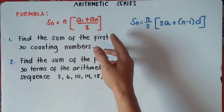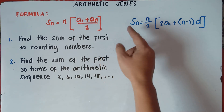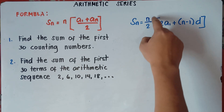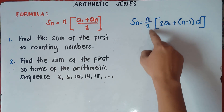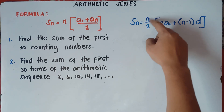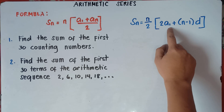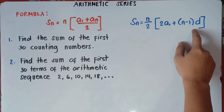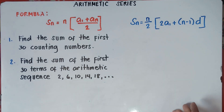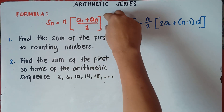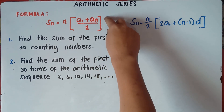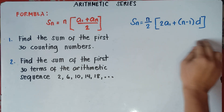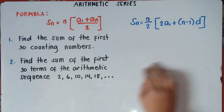Now if we don't have the value of our last term, we will be using the second formula: S of N equals N divided by 2, bracket 2 times the first term plus the quantity of N minus 1 times the common difference, then bracket. We will be using this formula if we have our last term. If we don't have our last term, we will be using this second formula.